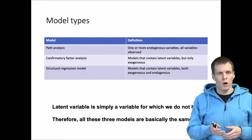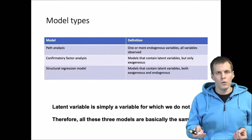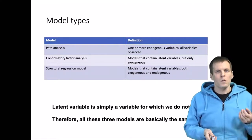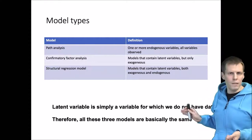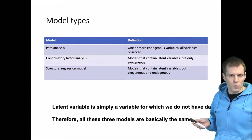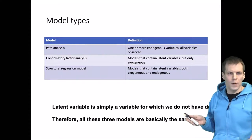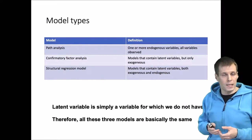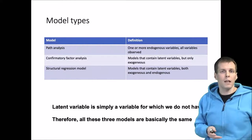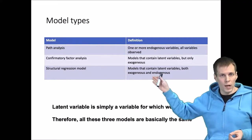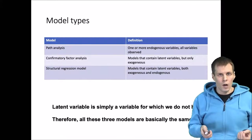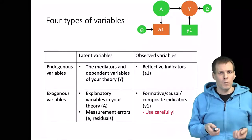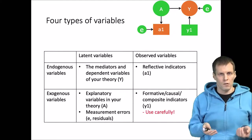We can, for example, run a regression model or a mediation model using the latent variables. A latent variable is simply a variable for which we don't have data — there is nothing else special about latent variables. All three modeling approaches are basically the same; we just don't have data for some of the variables in latent variable modeling, and that needs to be taken into account when we estimate the model.